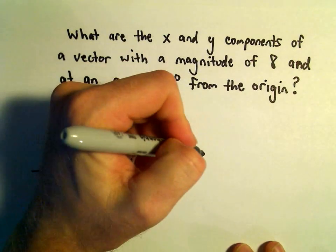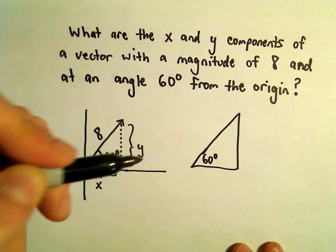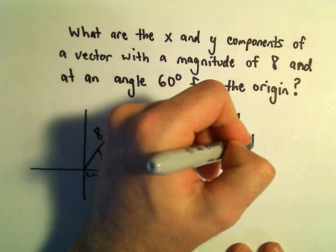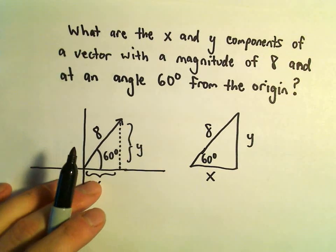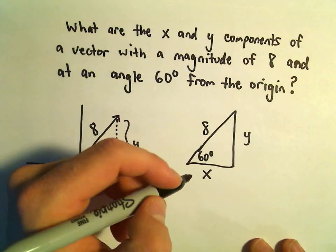Recall for a triangle - we've got 60 degrees, we've got 8, we've got y, we've got x. We're trying to solve for x and y. We can use sine and cosine.